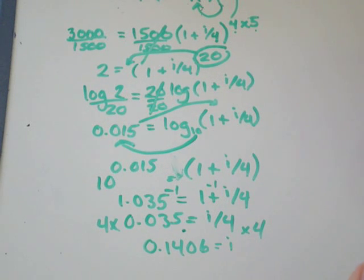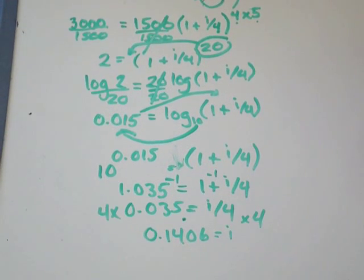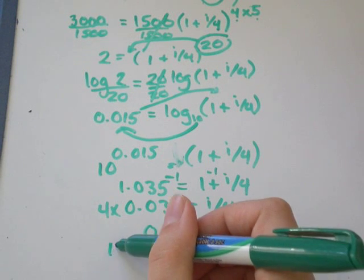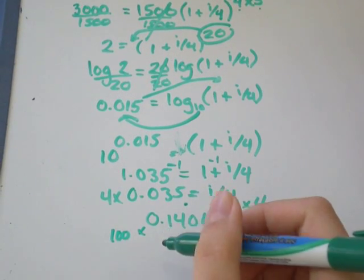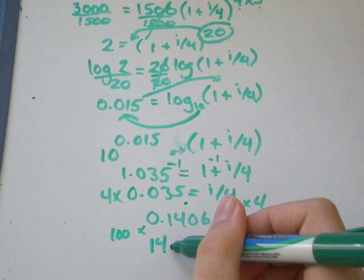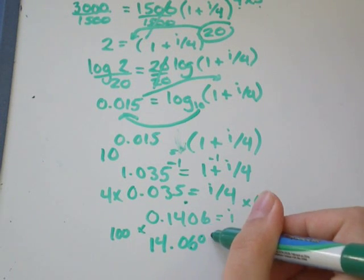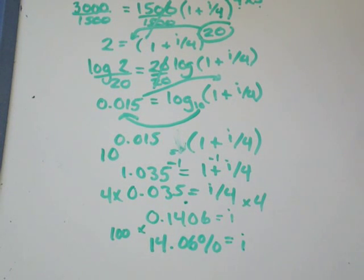So most people prefer to see interest written as a percent. So you should always make an effort to convert it back to percents. To do that, all you need to do is multiply by 100. And you'll get 14.06% equals i. So you would need an interest rate of 14.06% for your money to double if it's compounded quarterly over 5 years.